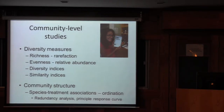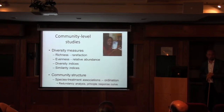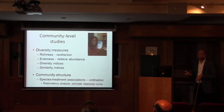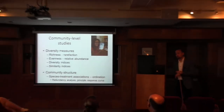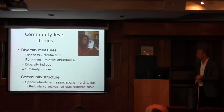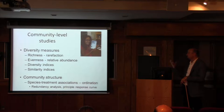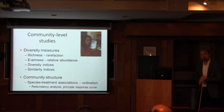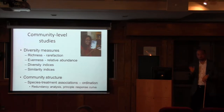Everything I'll talk about today is at the community level, or at least multiple species systems. When thinking about these, you have different analytical toolboxes to assess communities that differ from working at the population level. One objective may be to look at diversity — species richness, where we'll present rarefaction curves as a standardized way to compare species accumulation with sampling intensity among locations or habitats. We may look at evenness, or combine richness and evenness into a single diversity index, or use similarity indices to compare species overlap among different habitats or treatments.